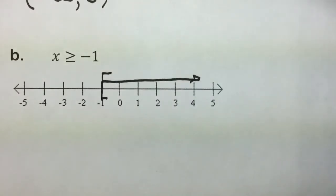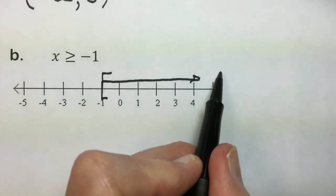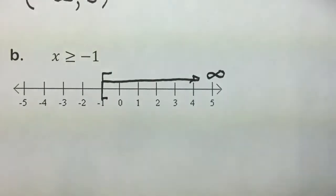This will continue infinitely towards positive infinity without bound. And positive infinity is represented by the sideways 8. To translate this into an equivalent interval notation for the set of numbers corresponding to this graph...